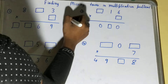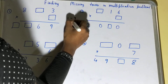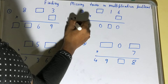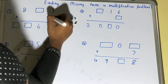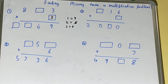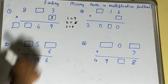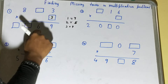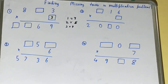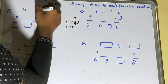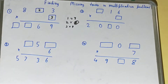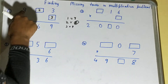Three times one is three, three times two is six, and three times three is nine. So if we multiply by three we get nine here. Next, we need to get something so that we get six — three times two is six, so if we place two here we'll get six.